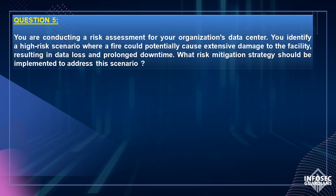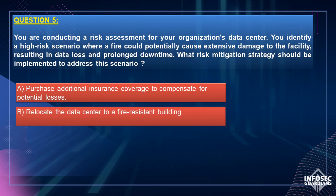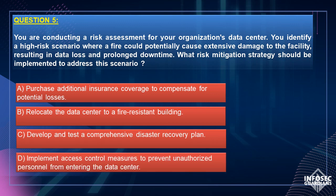Option A: Purchase additional insurance coverage to compensate for potential losses. Option B: Relocate the data center to a fire-resistant building. Option C: Develop and test a comprehensive disaster recovery plan. Option D: Implement access control measures to prevent unauthorized personnel from entering the data center.